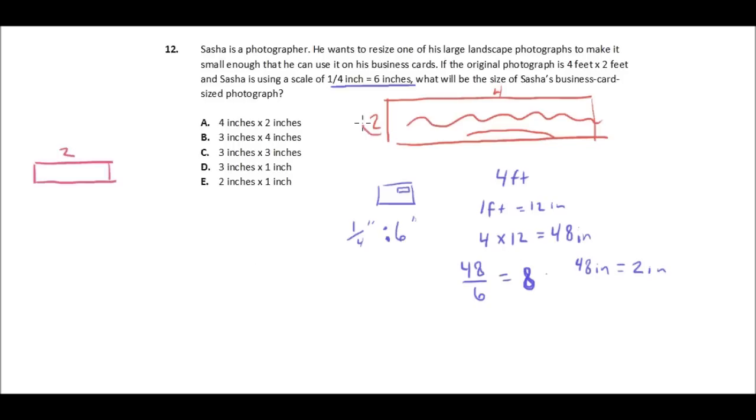Well, then what about the other side? So we've got, we have, this side's done. Now what about this 2 foot side? Well, same thing. We can figure out how many inches are in 2 feet. Well, 2 times 12 equals 24, and then we do the same thing.